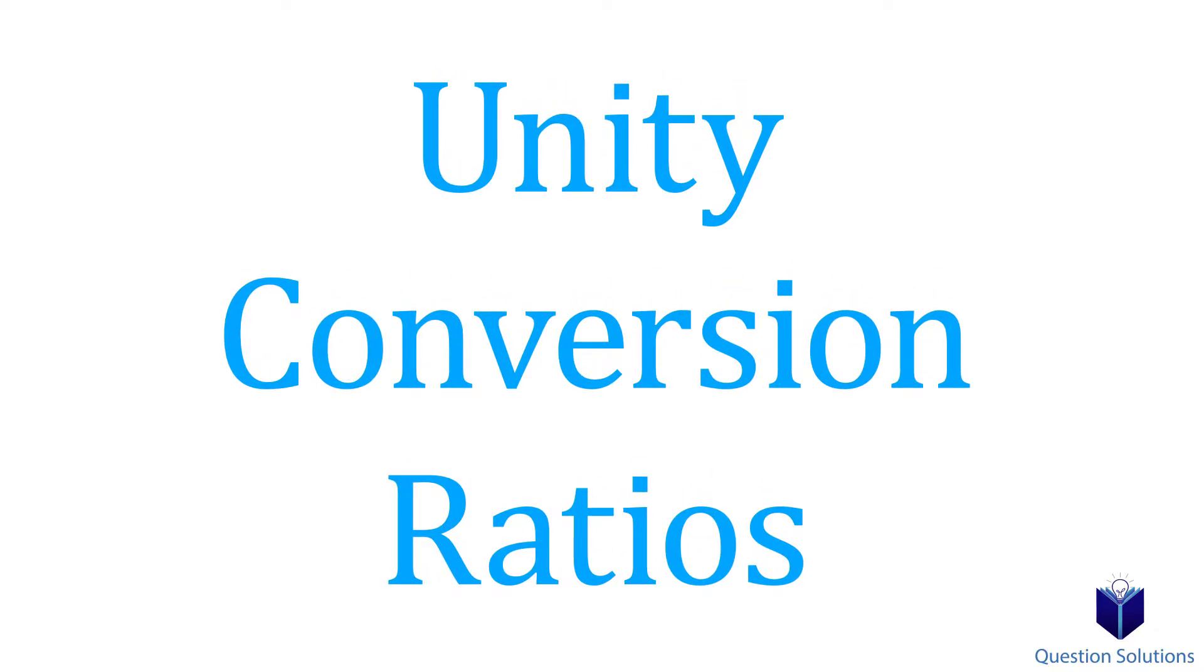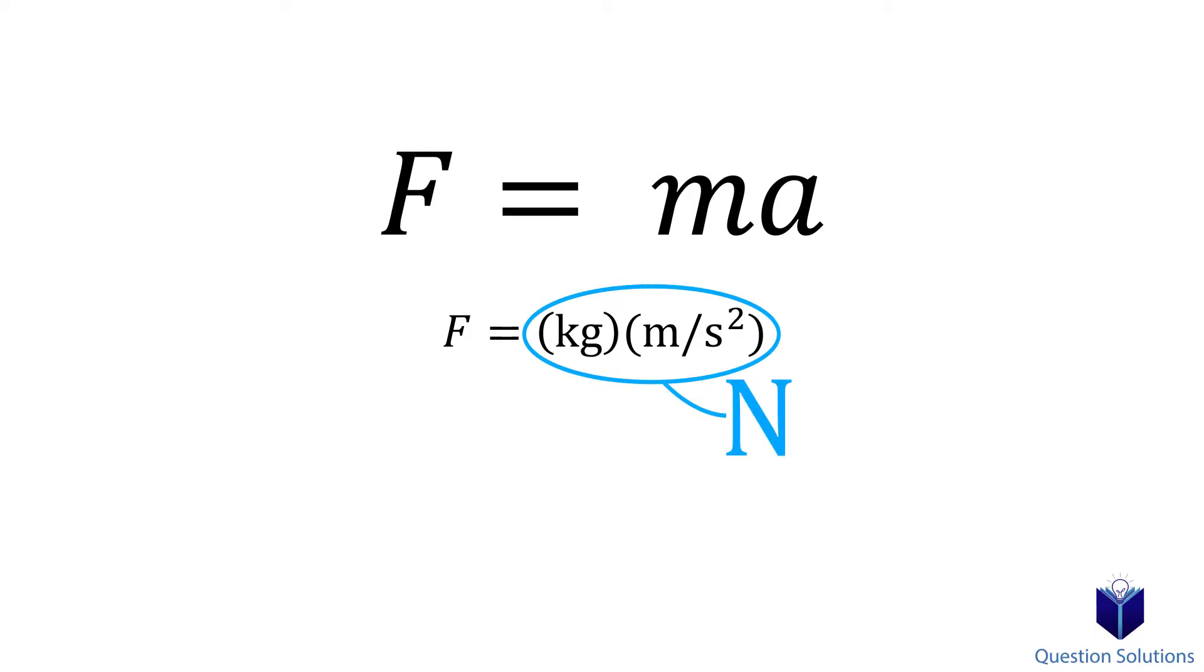When we usually solve our problems, we have a pretty good idea of the units that our answer is supposed to have. For example, we know the equation F equals ma, and we know that force is expressed in newtons. In other words, we know that mass in kilograms multiplied by acceleration, so meters per second squared, gives us newtons.